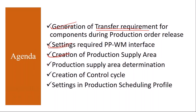Then we will see production supply area determination — how this production supply area is determined. After that, creation of control cycle — how the control cycle is created. Finally, settings in the production scheduling profile: what settings we need to do in our PP production scheduling profile. These are the topics we will cover.